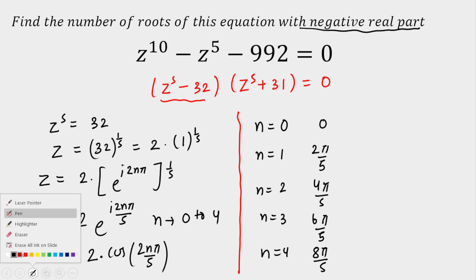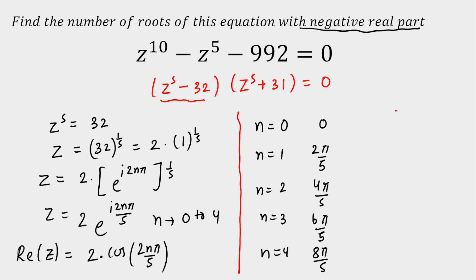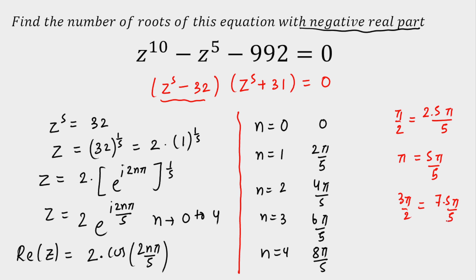For reference, I'll write the quadrant boundaries in units of π/5: π/2 corresponds to 2.5π/5, π corresponds to 5π/5, 3π/2 corresponds to 7.5π/5, and 2π corresponds to 10π/5. This makes it easy to identify which quadrant each angle falls in.